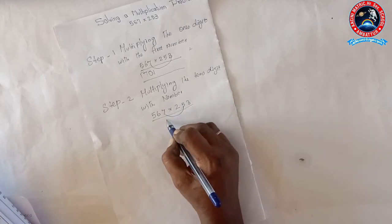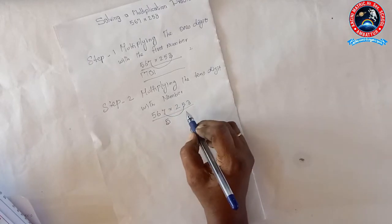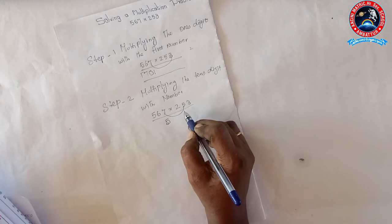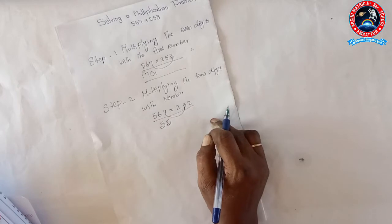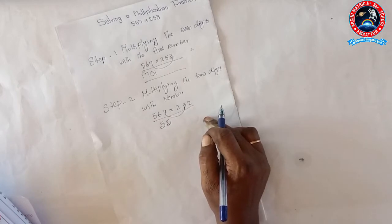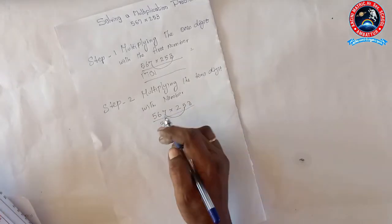5 times 7 is 35, balance 3. 5 times 6 is 30, 30 plus 3, 33, balance 3. 5 times 5 is 25, 25 plus 3, 28.